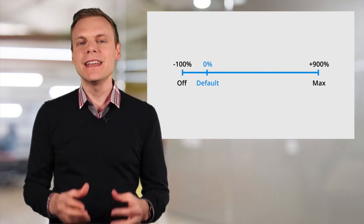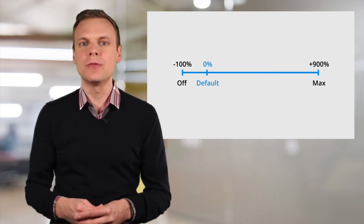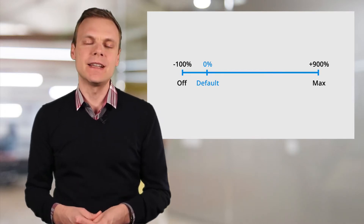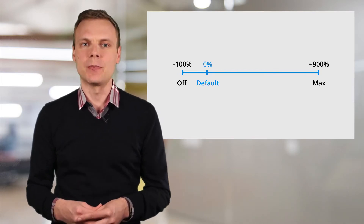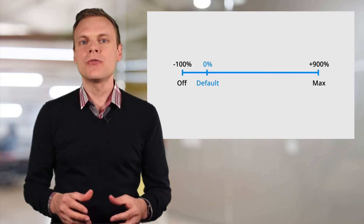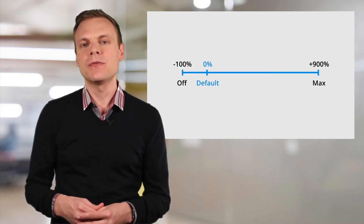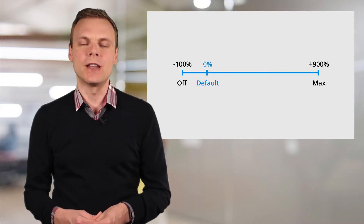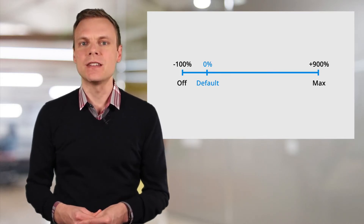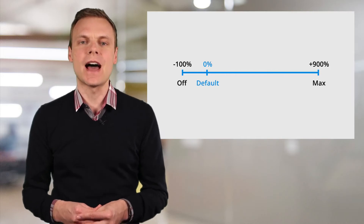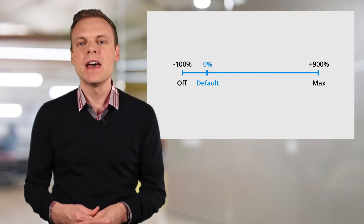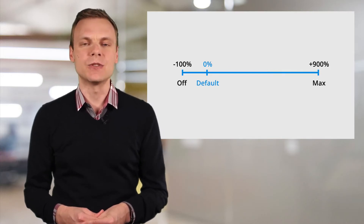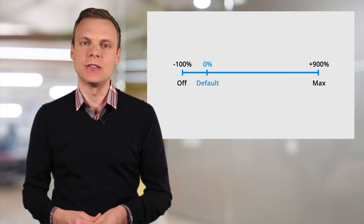Google AdWords allows you to adjust bids up or down. You can increase your final mobile bid by 900% or decrease it by 100%. For example, if the default bid was $1 and you adjusted it by an additional 100%, then the final bid for mobile devices would be $2.